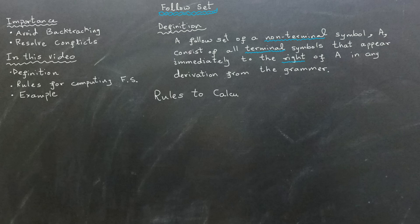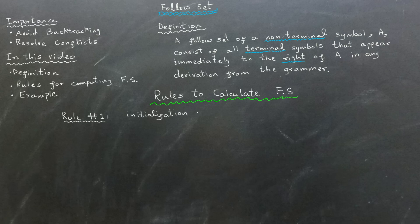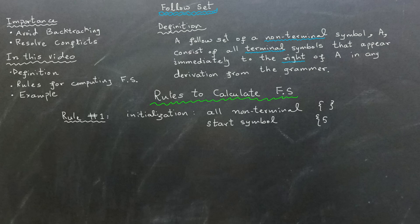Let's go through the steps to compute the follow set. Rule number one: start by initializing the follow set of each non-terminal as an empty set. But for the start symbol, include the dollar sign, which represents the end of input marker. Here, assume you have a production where a non-terminal A produces a sequence alpha, B, beta.